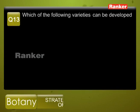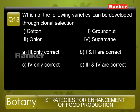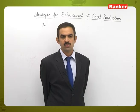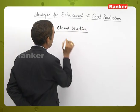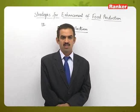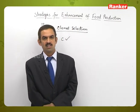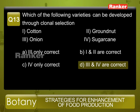Question number thirteen: which varieties can be developed through clonal selection? — 1) cotton, 2) groundnut, 3) onion, 4) sugarcane. Options: a) three only, b) one and two, c) four only, d) three and four. Clonal selection is used for vegetatively propagated plants. Onion and sugarcane are vegetatively propagated species among the options. Option d (three and four) is the correct answer.